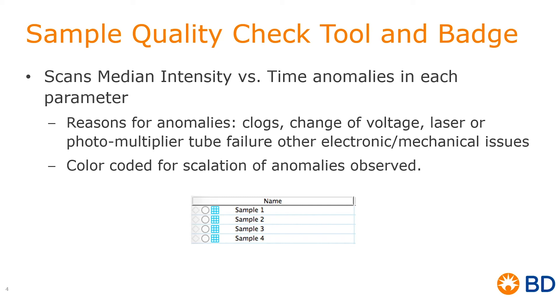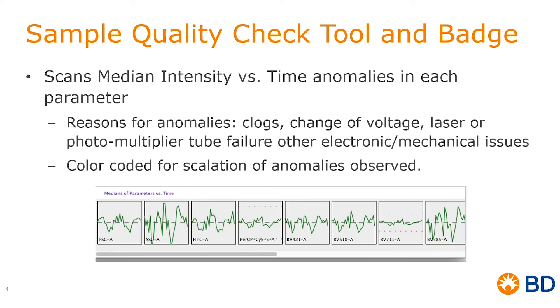If you go ahead and double click it, what you're going to get then is this representation of the medians of the parameter versus time that I was mentioning that FlowJo uses to check for the quality of your sample.